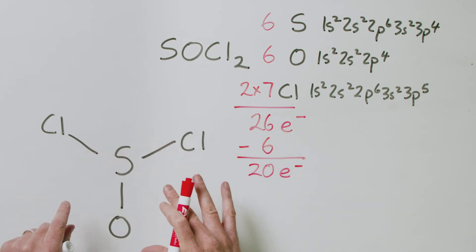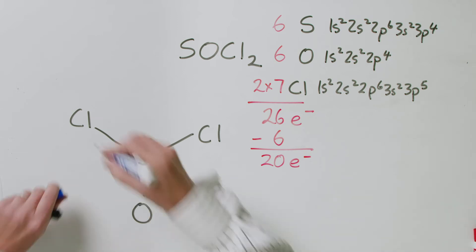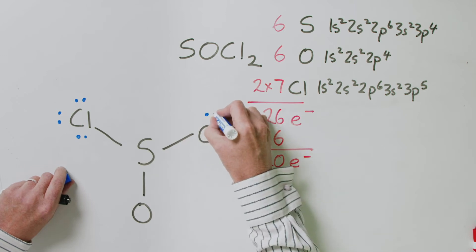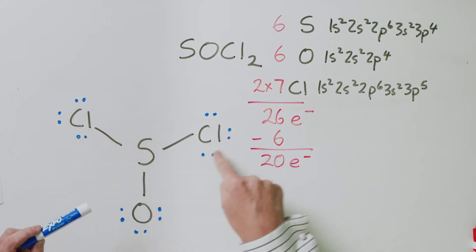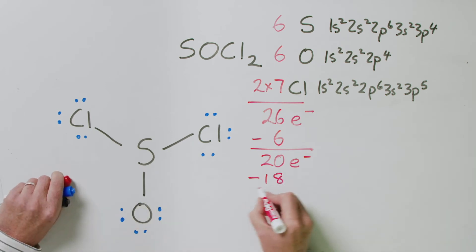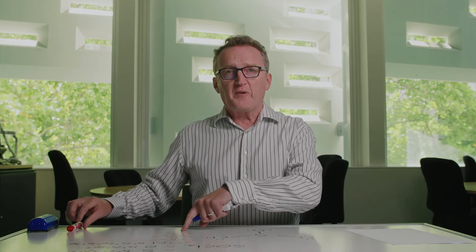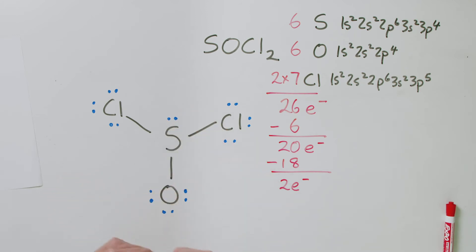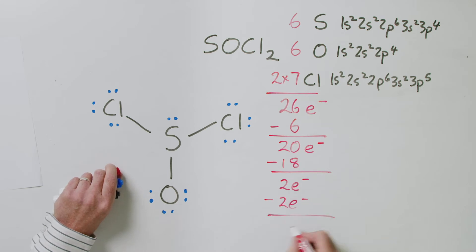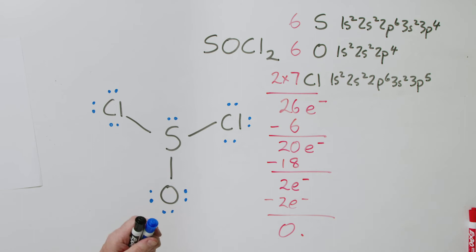The second step is to put six valence electrons — as lone pairs — on each of the outer atoms. Six electrons on each of the three outer atoms uses 18 electrons, leaving us with two electrons. The third rule is to put any remaining electrons on the central atom. So we put those two remaining electrons on the central sulfur as a lone pair. We've now used all 26 valence electrons to generate our Lewis structure.